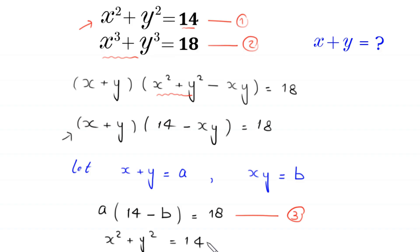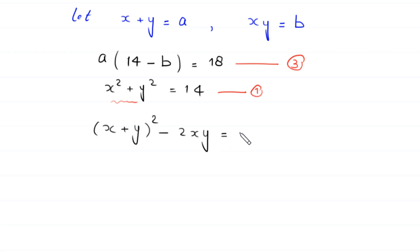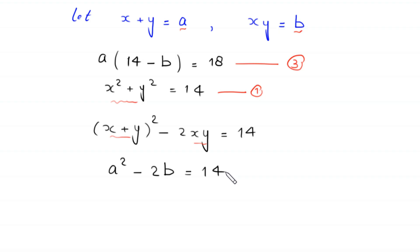From equation 1, x squared plus y squared equals 14. Using the algebraic identity, x squared plus y squared equals x plus y whole squared minus 2xy, which equals 14. Replacing x plus y with a and xy with b, this becomes a squared minus 2b equals 14.